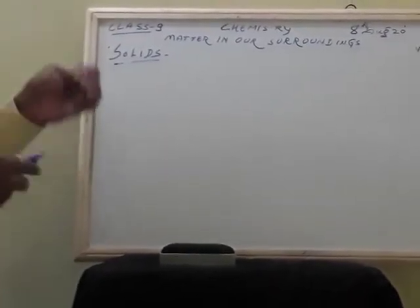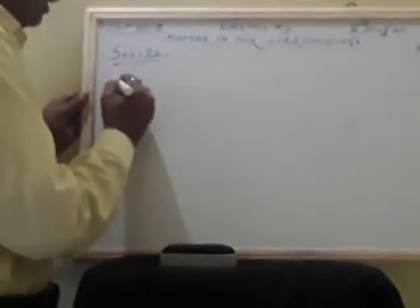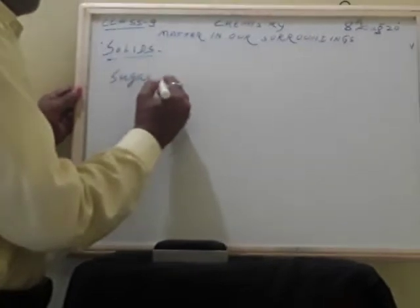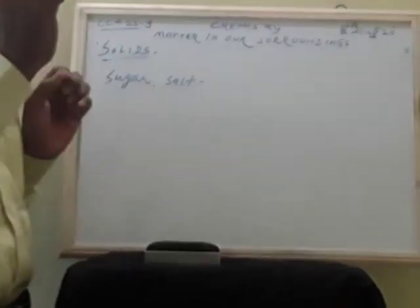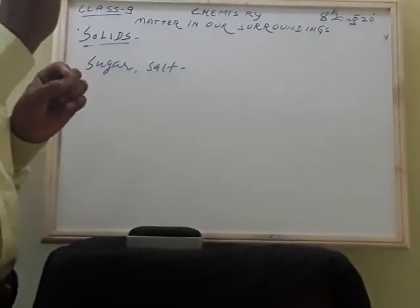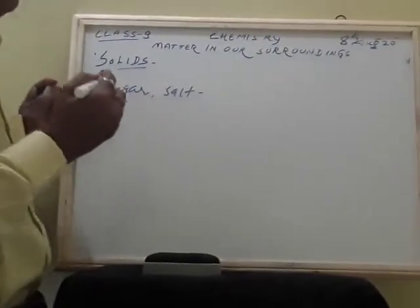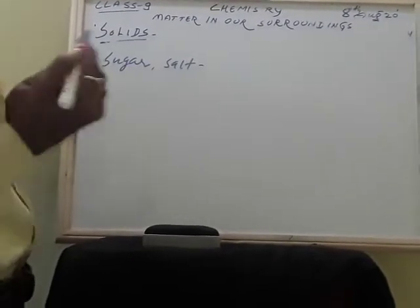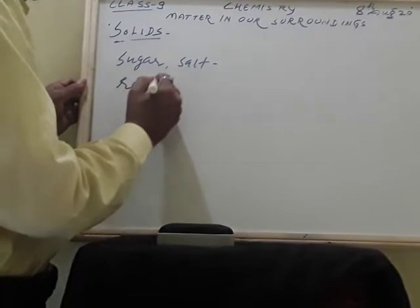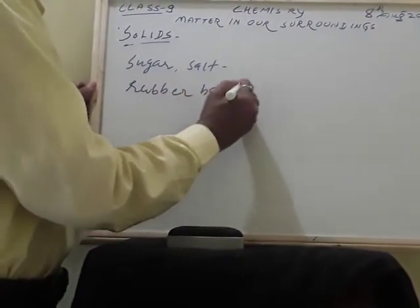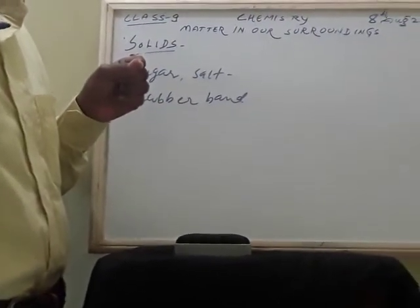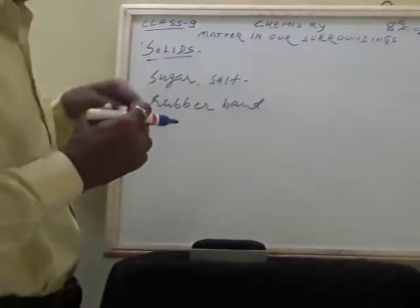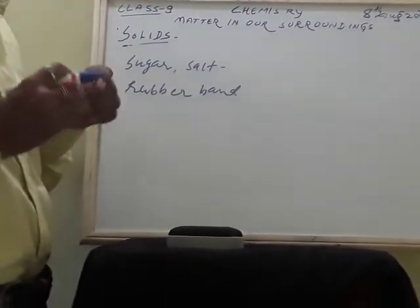Solids have different shapes and boundaries. For example, if you take sugar crystals or salt crystals, you can touch and find that the particles have some boundaries, shape, and size. Is a rubber band a solid? Yes, it is also a solid. But in the rubber band, the size increases when you stretch it and comes back to normal when you release it. However, when you hammer or beat it, the rubber band will break.